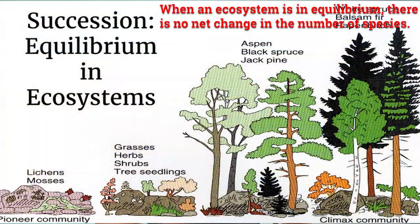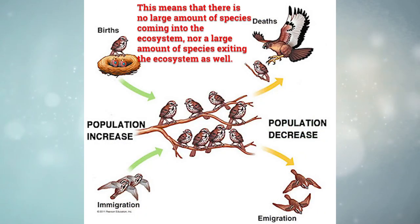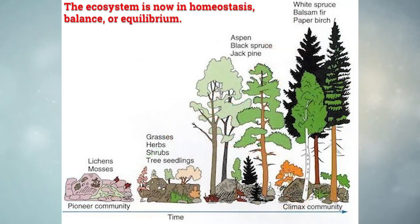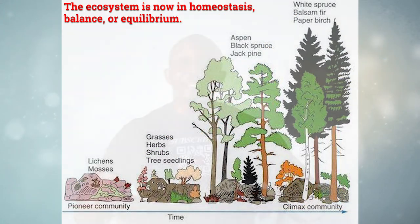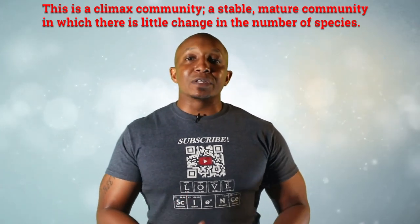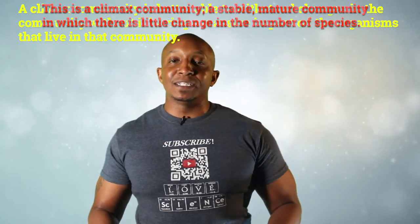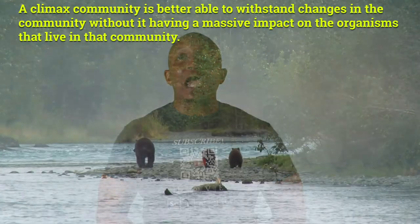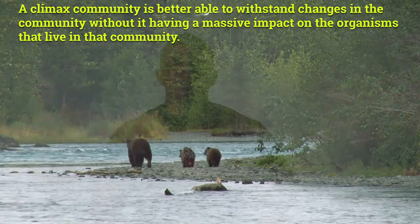When the ecosystem is in equilibrium, there is no net change in the normal species. This means that there is no large amount of species coming into the ecosystem, nor a large amount of species exiting the ecosystem. New species come into the community at about the same rate that others leave. The ecosystem is now in homeostasis, balance, or equilibrium. This is a climax community — a stable, mature community in which there is little change in the normal species. A climax community is better able to withstand changes without having a massive impact on the organisms that live there.